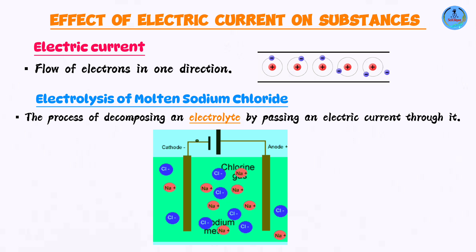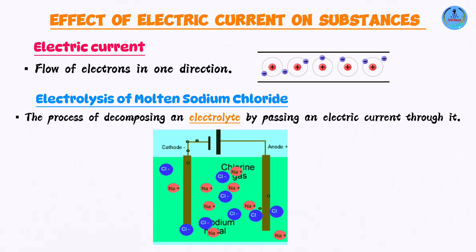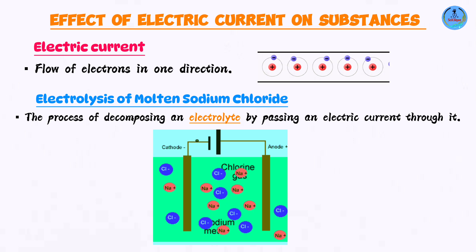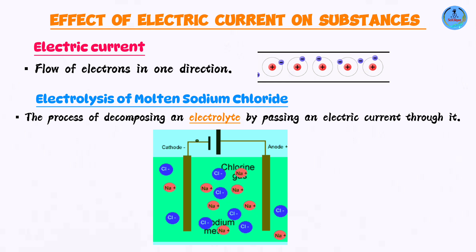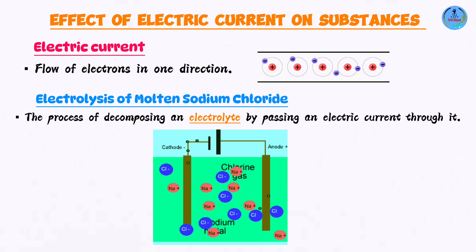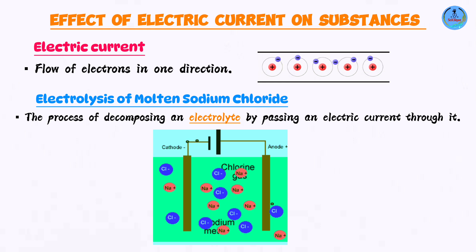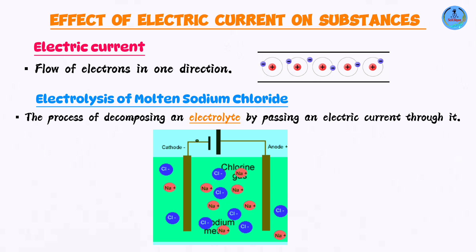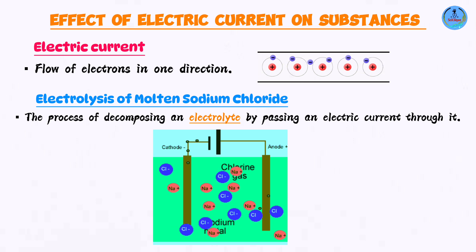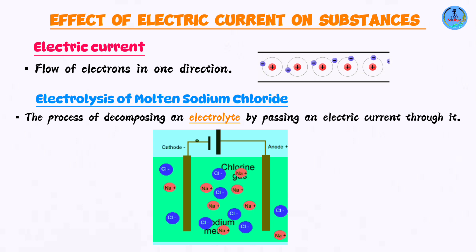Remember what we said about ionic compounds? When they are in molten state — that is, when they are in liquid state — they can conduct electricity. So our electrolyte in this case is molten sodium chloride.